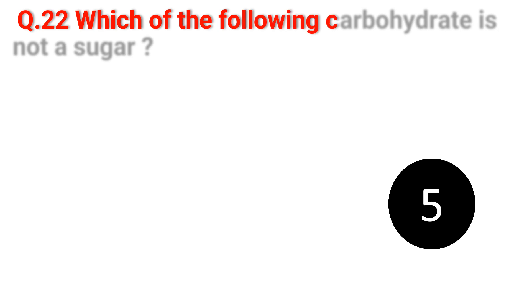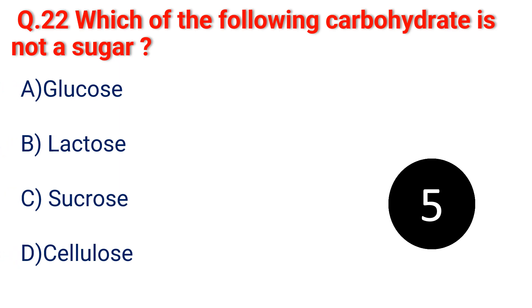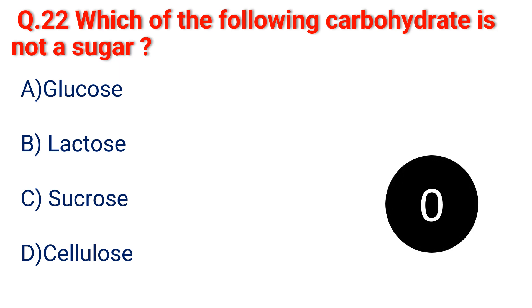Question 22. Which of the following carbohydrates is not a sugar? A. Glucose. B. Glucose. C. Sucrose. D. Cellulose. The answer is D. Cellulose.